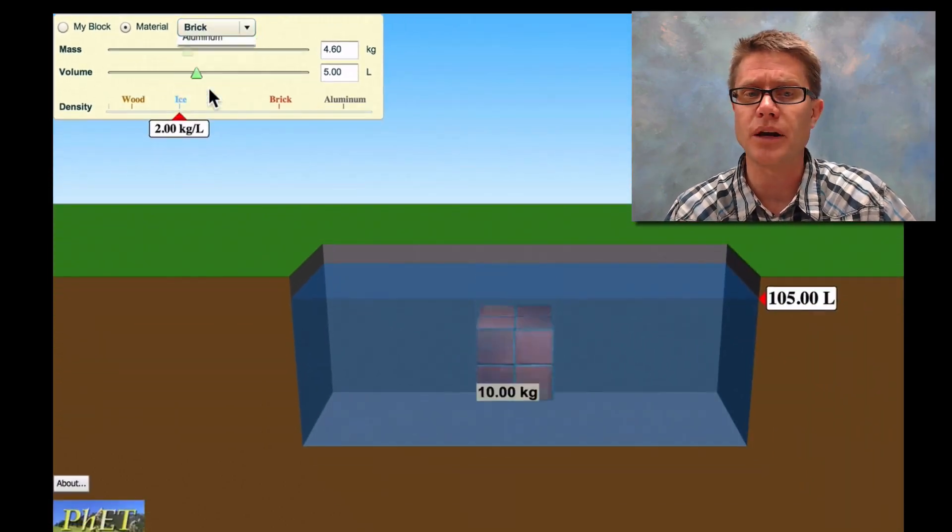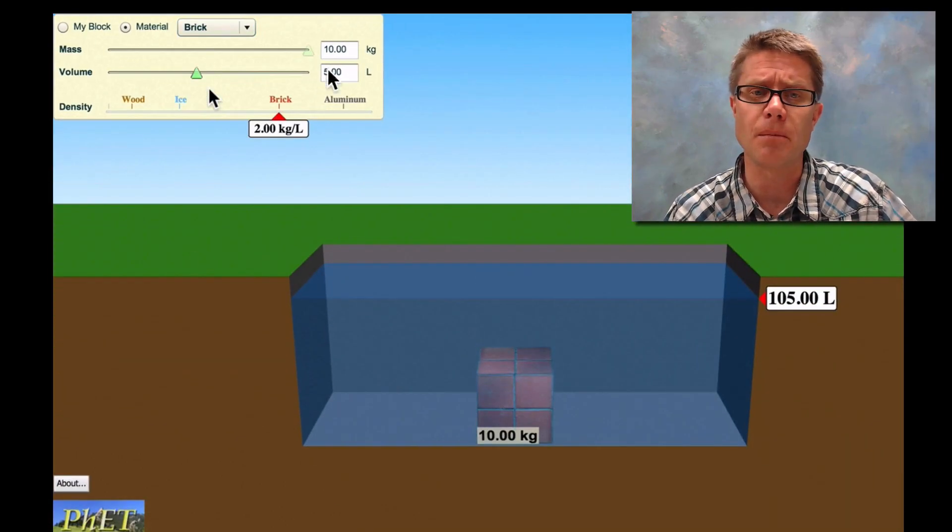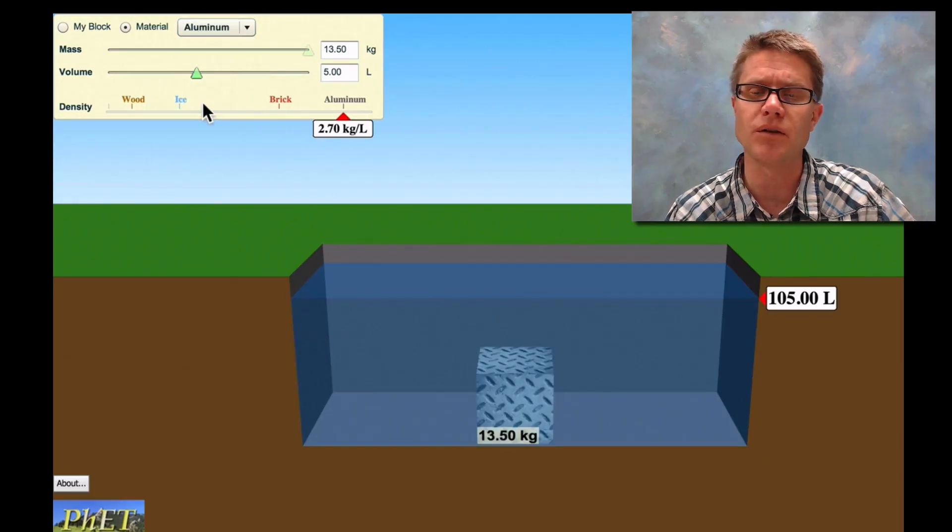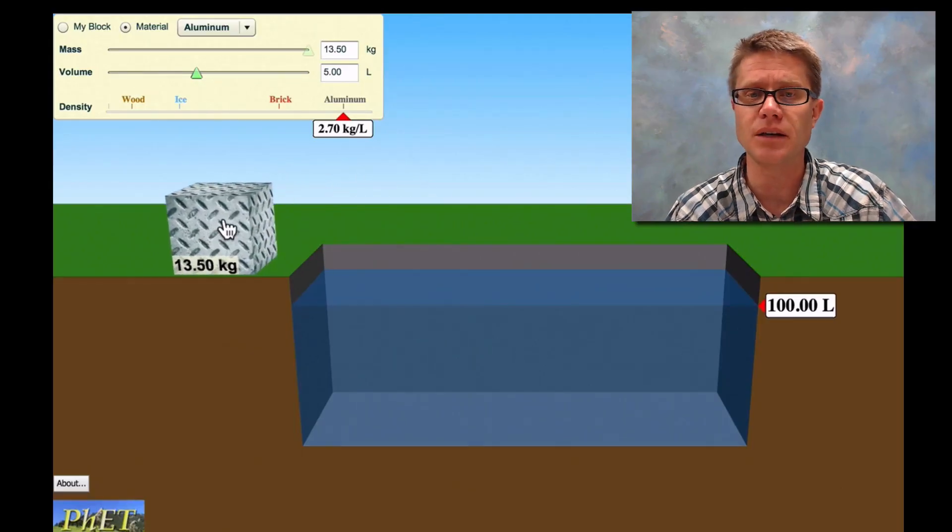Now let's switch that to a brick. You can see that our mass is twice that of our volume, so now we have a density of 2 kilograms per liter and it definitely sinks. And then we could move it to something like aluminum. We have a much higher mass compared to that volume, so we have a high density. That's why it sinks.